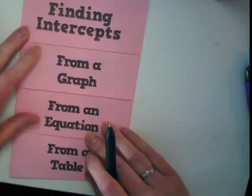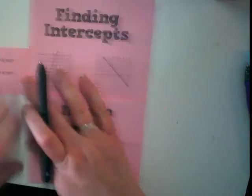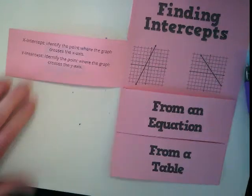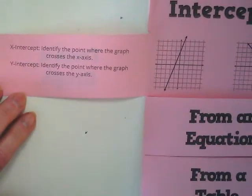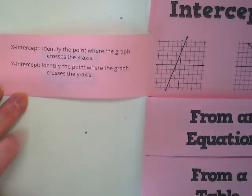We're going to start finding intercepts from a graph. I'm going to zoom in on the opening of the left flap first. So the x-intercept, we've talked about intercepts before. An x-intercept is where the point crosses the graph on the x-axis. And the y-intercept is the same for the y-axis.